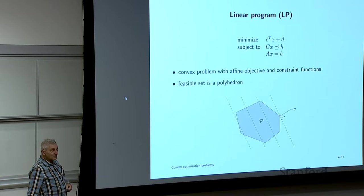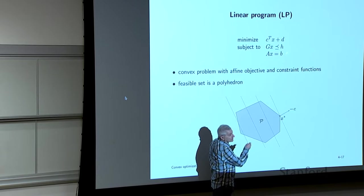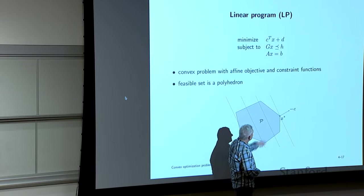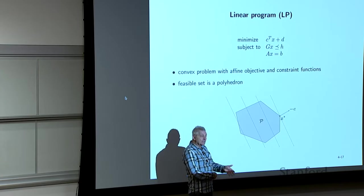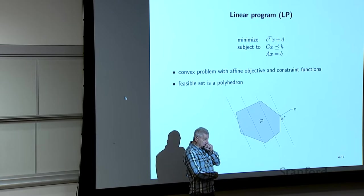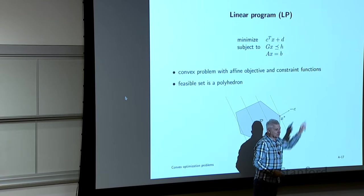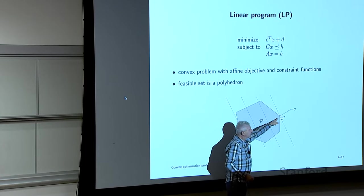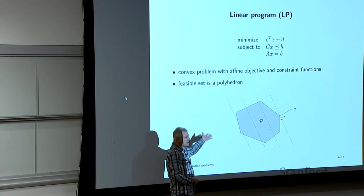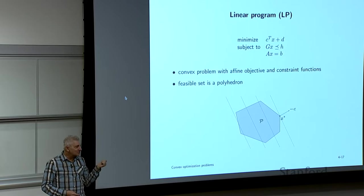Linear programming became much more interesting once computers existed. The picture is: your feasible set is a polyhedron, each face corresponding to a single linear inequality. There's a vector C, and the dashed lines show level curves of the objective C^T x, orthogonal to C. Your job is to slide in that direction as far as possible. Obviously, we're not interested in solving LPs with two variables — we're interested in 10,000 variables and 30,000 constraints.